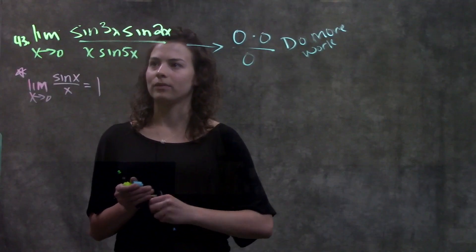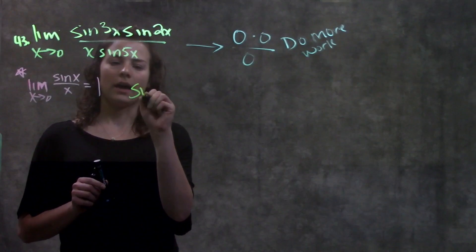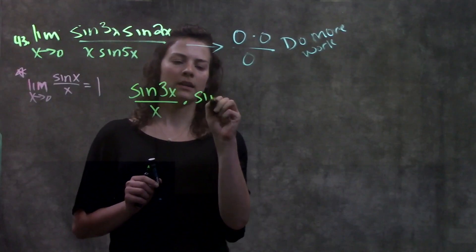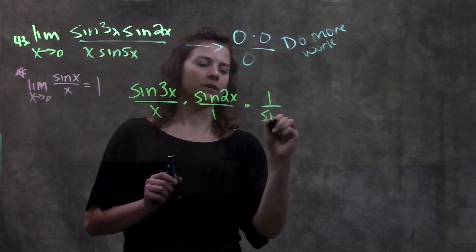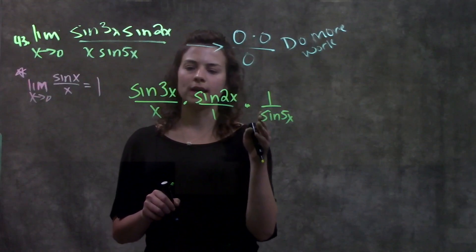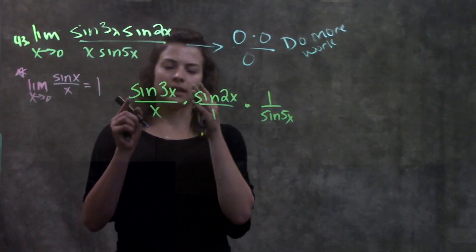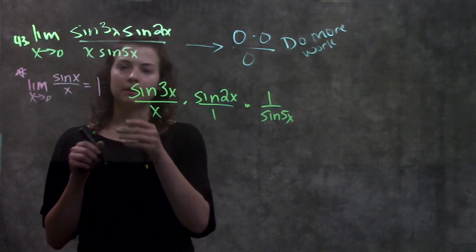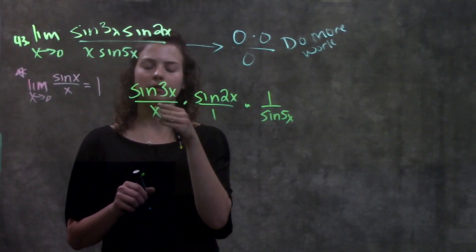The limit as x approaches zero of sine three x — I'm going to keep that over x — times sine two x over one, times one over sine five x. I just split up my function and wrote it like this. Now I'm going to multiply by something so that each of these sections matches the identity. Remember my identity is sine something over that same something equals one, so at this first fraction I have sine three x over x.